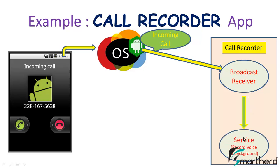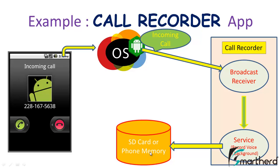The broadcast receiver catches the message and in return starts a service in the call recorder. The service records all the conversation going on between you and the caller in the background, without disturbing your call. When you disconnect the call, the Android operating system broadcasts that the call has been disconnected, which is again heard by the broadcast receiver. The broadcast receiver then commands the service to save the file and store it in the phone memory, data storage, or SD card.